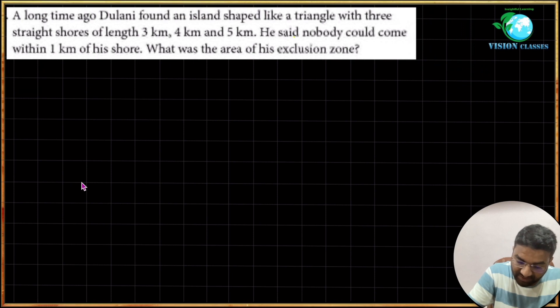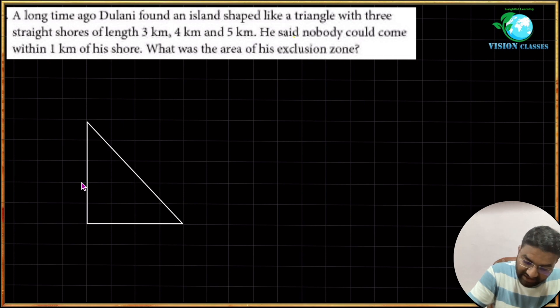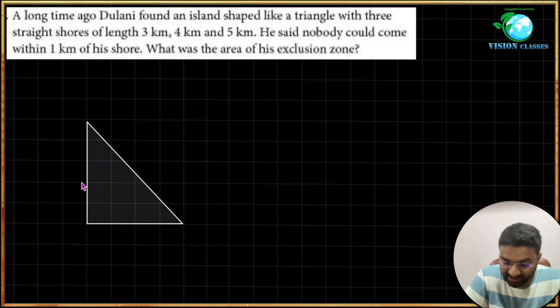So firstly here you have 4 kilometers, 3 kilometers, okay, and this one is, let's assume that 5 kilometers. And around this 3, 4, and 5 kilometer, you have an exclusion zone. So here draw this exclusion zone exactly perpendicular.